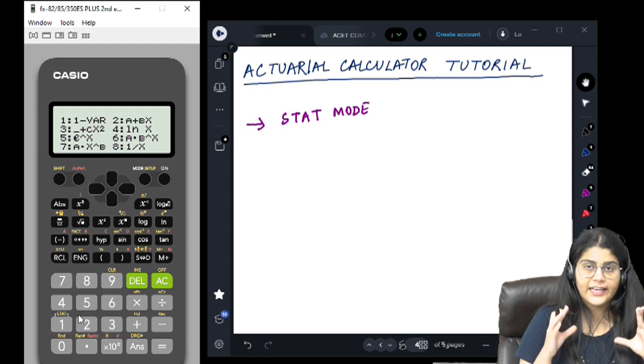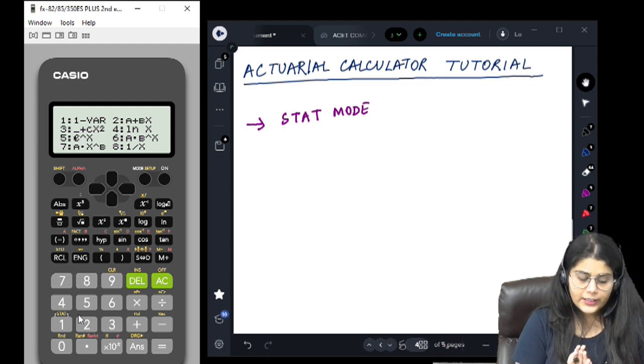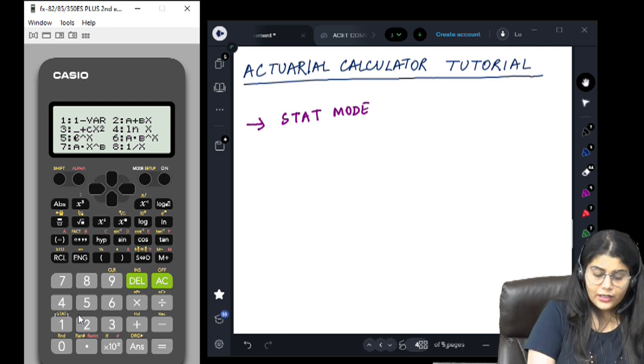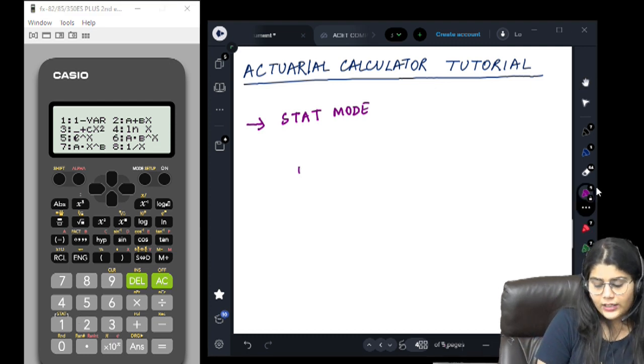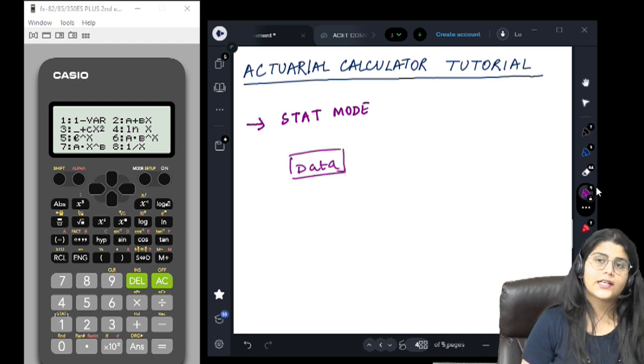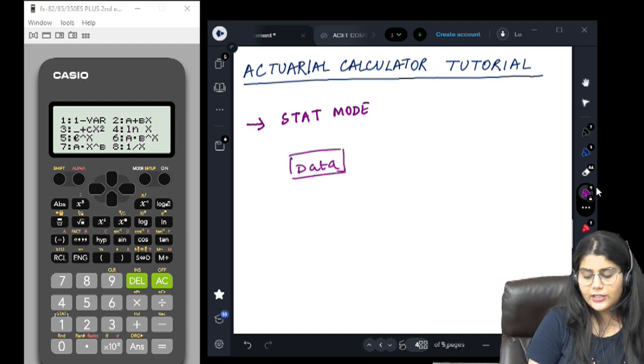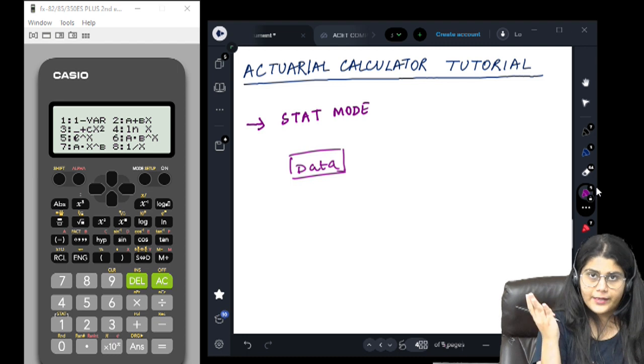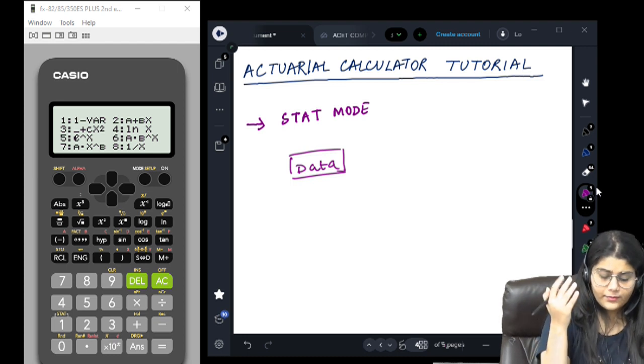As soon as you do this you have 8 options on your calculator screen. For example, the first one is 1 variable. This entire thing is actually dependent on what kind of data you have. If it's a 1 variable data you go for number 1. If it's a 2 variable data, you go for a plus bx or number 2.